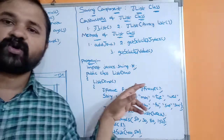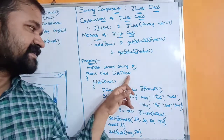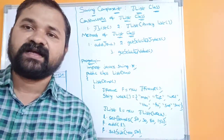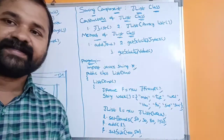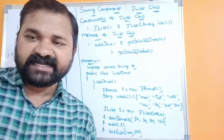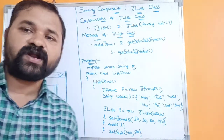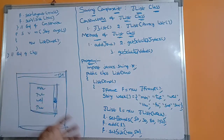Next we compile the program: javac ListDemo.java. Then we run the program: java ListDemo. Whenever we run the program, we will get the output — a frame displaying the JList with the days of the week.